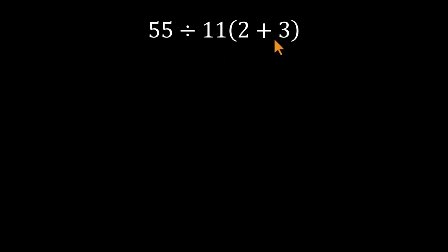They begin with the parentheses, 2 plus 3 equals 5. Then they take that 5 and multiply it by 11, giving 55.